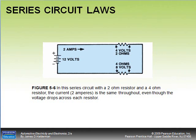In your book, volume two, page 82, if you're following along. In this series circuit with a two ohm resistor and a four ohm resistor, the two amp current is the same throughout, even though the voltage drops across each resistor. The two amps should remain constant - that's one of our laws. The amperage should be the same everywhere in the circuit.